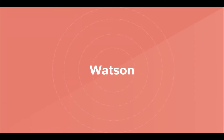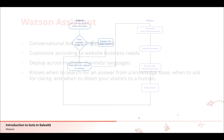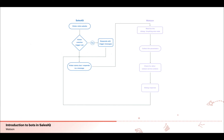The Watson Assistant powered by IBM helps you build powerful bot assistance for your website. You can customize it according to your business needs and deploy it across multiple channels to bring help to your customers where and when they need it. Most chatbots in the market try to mimic human interactions, which can frustrate users when misunderstandings arise. Watson Assistant knows when to search for an answer from a knowledge base, when to ask for clarity, and when to direct your visitors to a human. You can integrate the Watson Assistant easily with the Zobot platform.